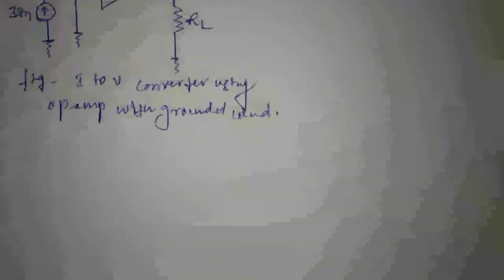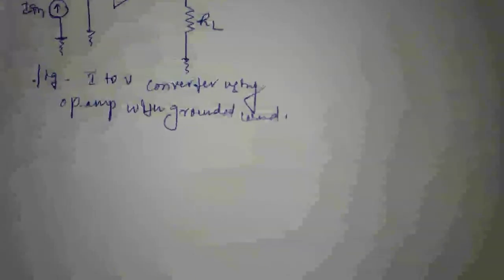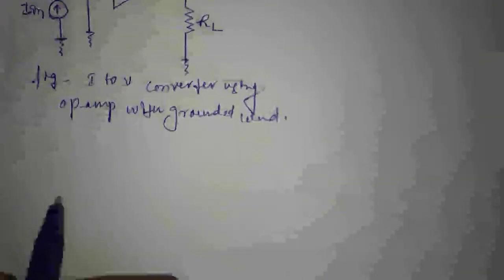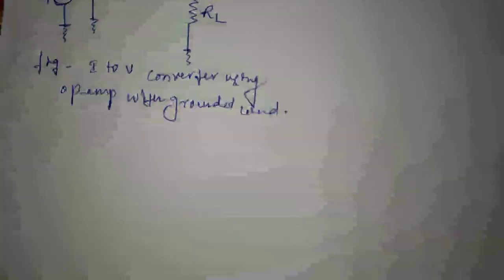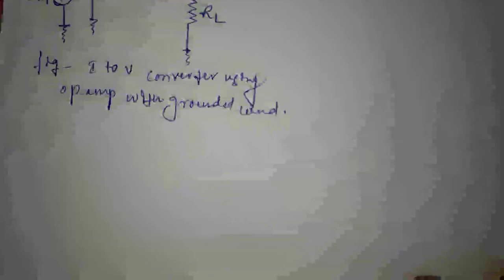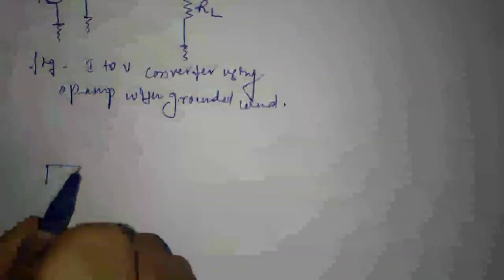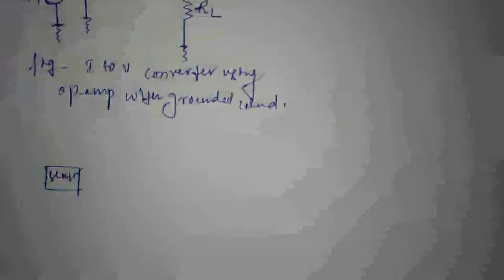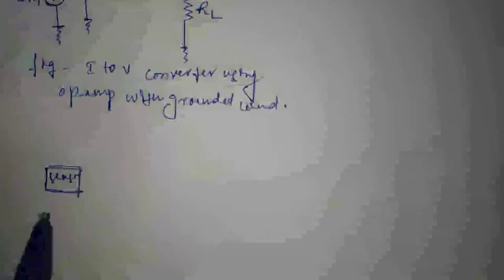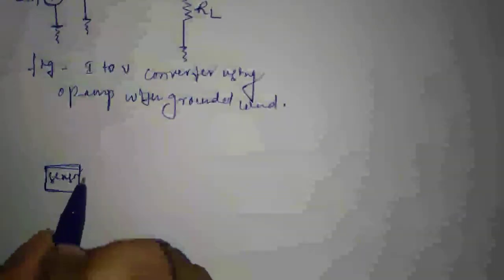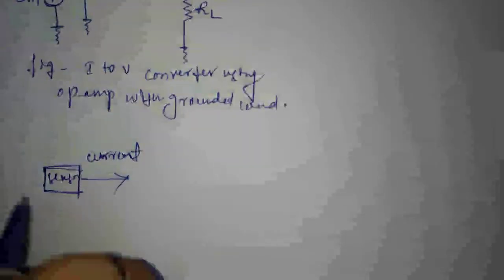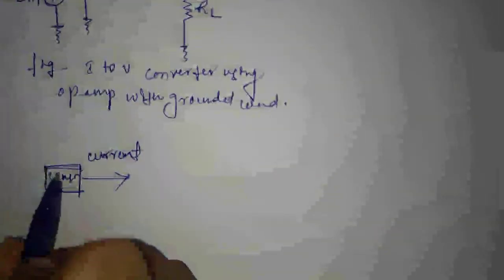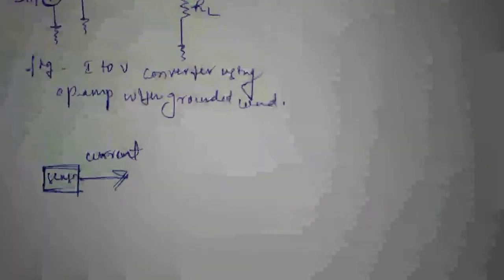Before getting into this, first we will try to understand what is the need for having a circuit like a current to voltage converter. As I told in the previous video, in most industries we need to measure different physical parameters — it may be temperature, pressure, density, or anything. For that we use sensors. Sensors measure any parameter and give output in terms of either current or voltage.